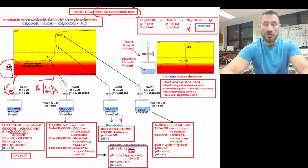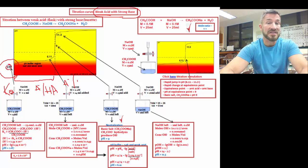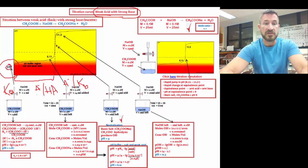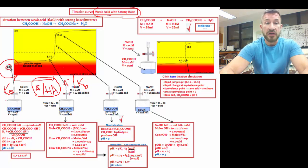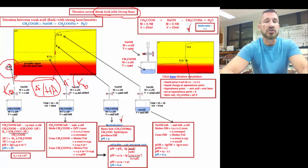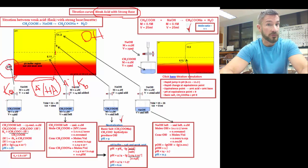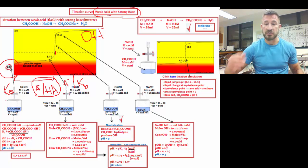At the equivalence point, all of your HA has been changed to A⁻, and this requires a Kb calculation — just one more step required. We've done these before, so it's not completely new. Then, after the equivalence point, the major species is going to be hydroxide. When it's basic, you use a formula for calculating the pH from the extra hydroxide concentration. So we're going to go through each one of these today.